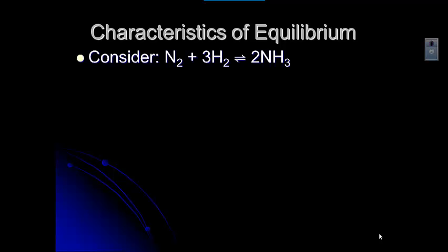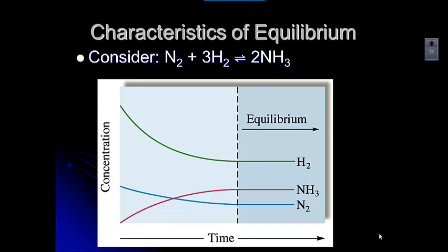Let's look at this example reaction: nitrogen plus hydrogen creates ammonia. You'll notice it has this funky arrow, the double half arrows. That tells you it's an equilibrium system.